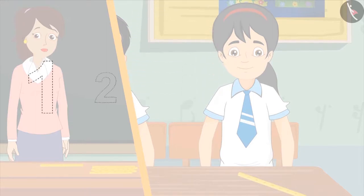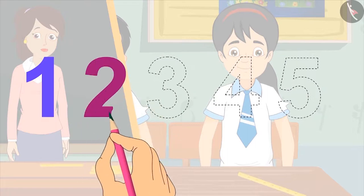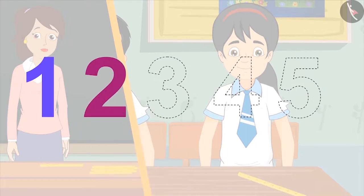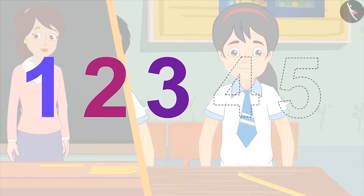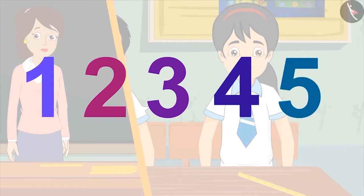You have seen how you can write each number as a special symbol. Let us learn to write these symbols. We write 1 like this. 2 like this. 3 like this. 4 like this. And 5 like this. All of you must practice writing these symbols.